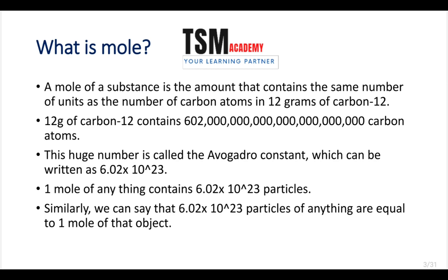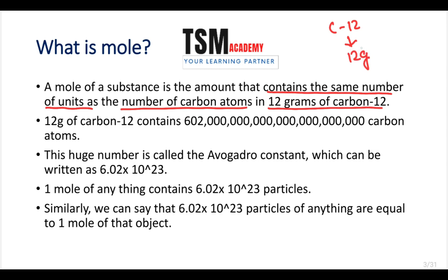A mole of a substance is the amount that contains the same number of units as the number of carbon atoms in 12 grams of carbon-12. Carbon-12 is the isotope of carbon having atomic mass 12. In 12 grams of carbon-12, the number of atoms contained in it — that is called one mole. So the number of carbon atoms in 12 grams of carbon-12 is 6.02...